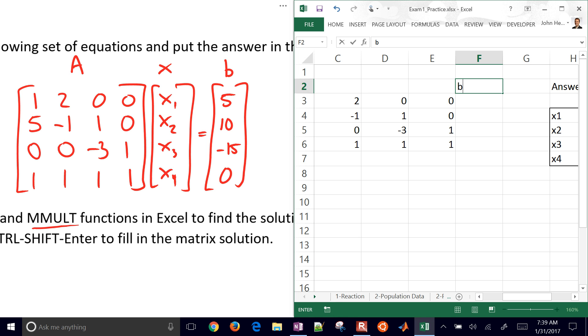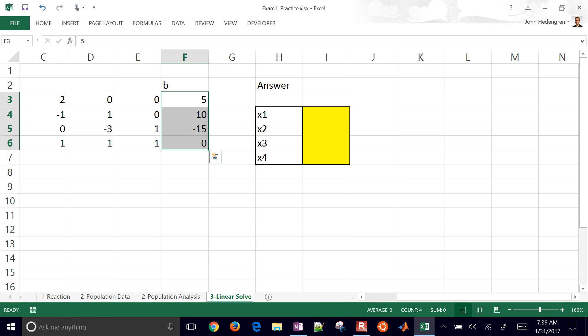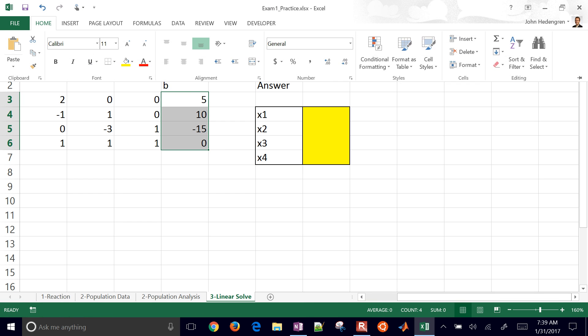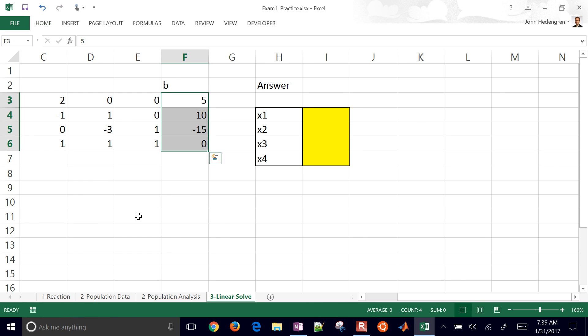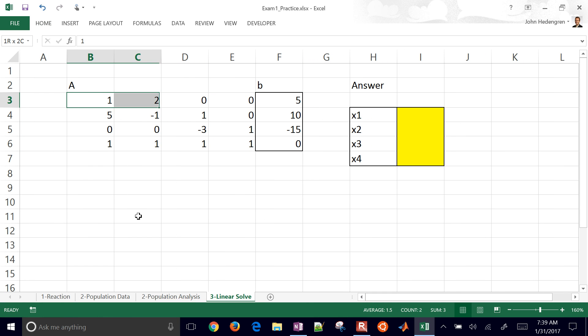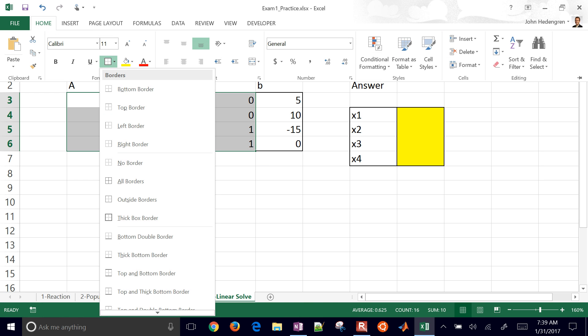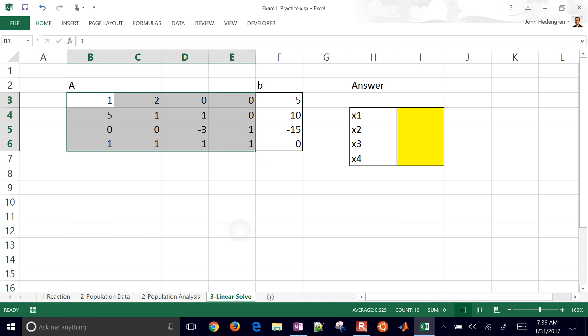Let me put in my B vector as well. Okay, that's going to be five, ten, negative 15, and zero. Okay, if you want to put a box around them, you can as well. Okay, I've got these in here. You can put this thick border around it just to show where the matrix is located. Okay, there we have.